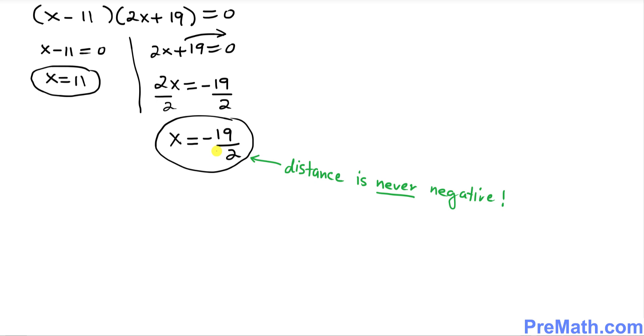And since x represents the distance and we know distance can never be negative, so that means we're going to rule out this possibility.